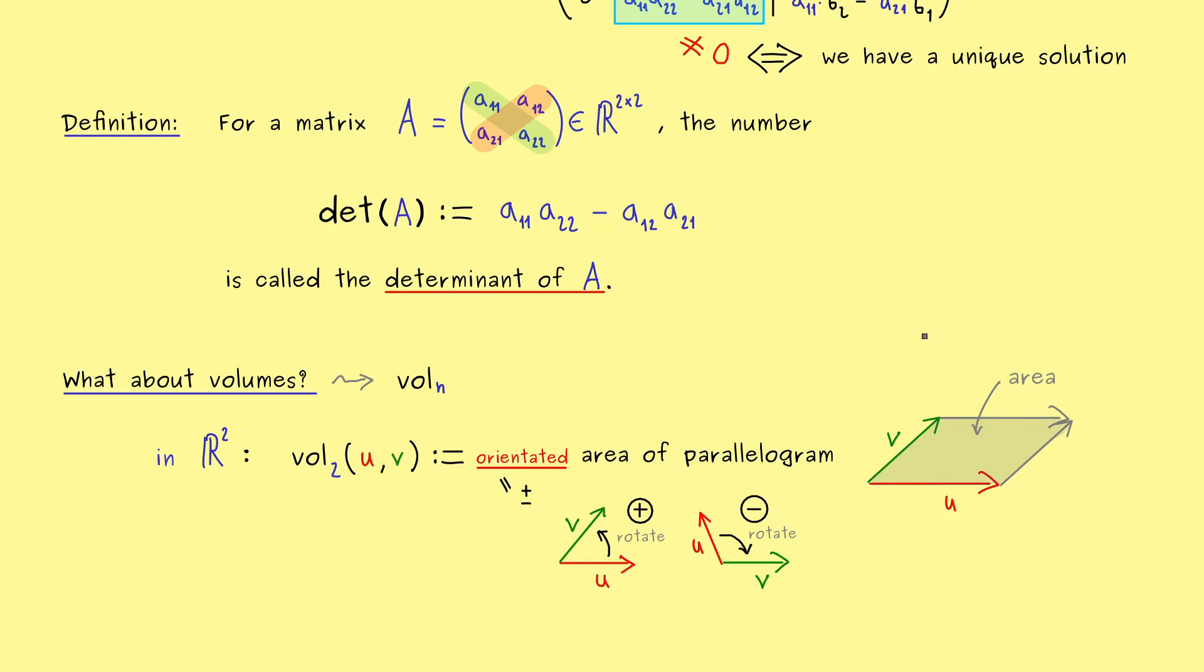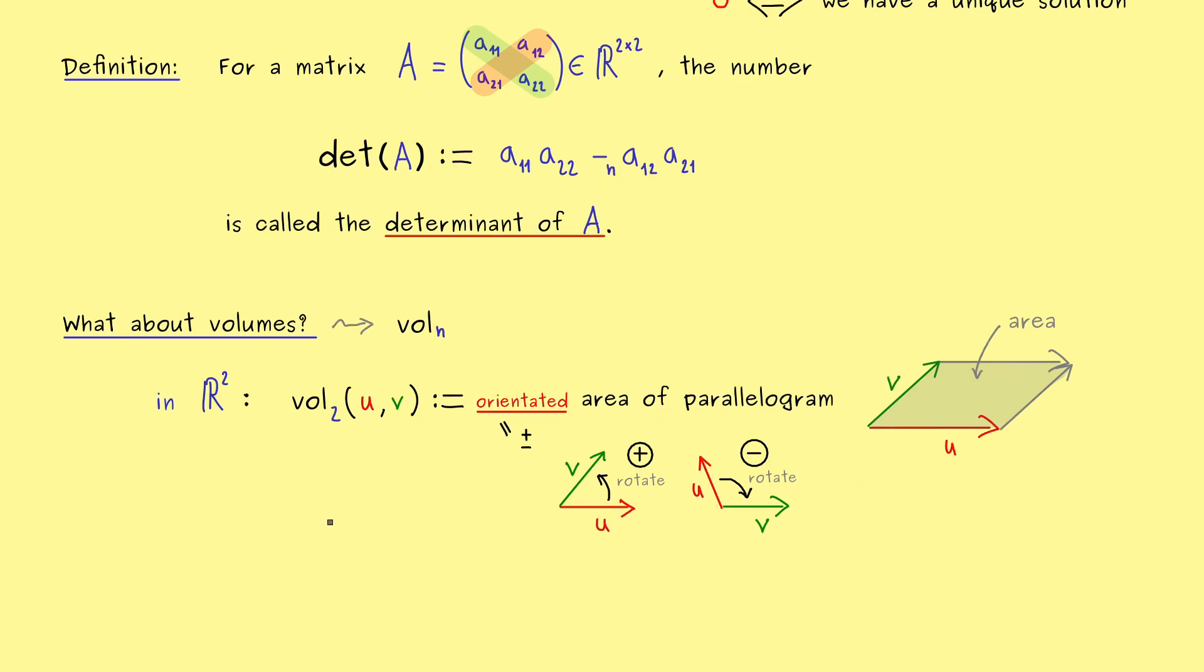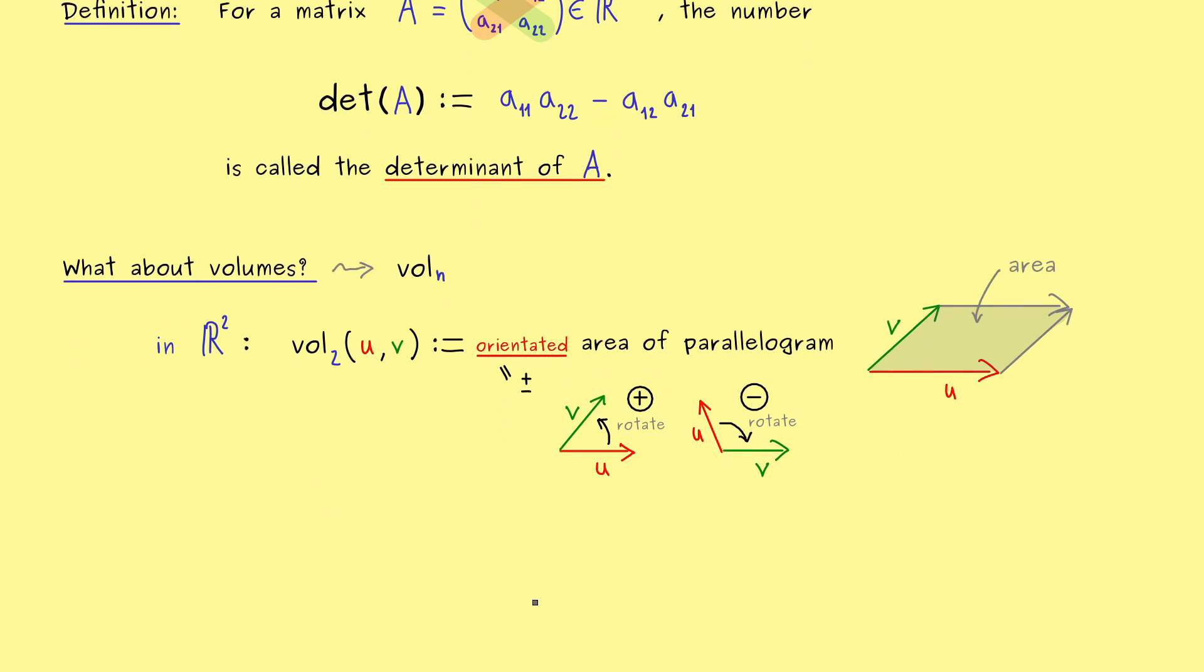And that's all. This is how we define orientation for two vectors in R². And with that we can give the area of the parallelogram an additional sign. And with that we have a so-called orientated two-dimensional volume. However, at this point you might say that we have already seen this orientated area of a parallelogram, and indeed we discussed that in Part 10 when we talked about the cross product in R³.